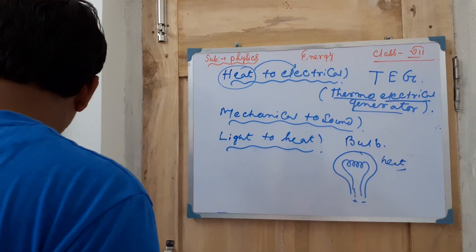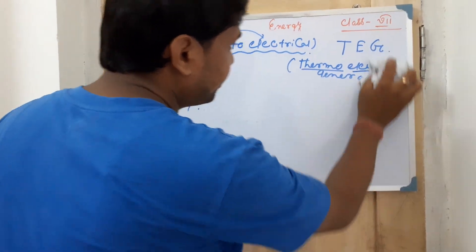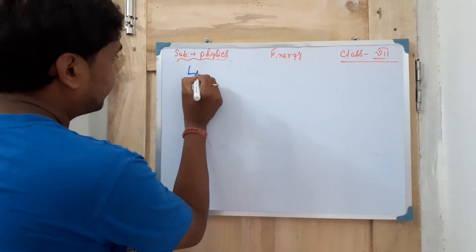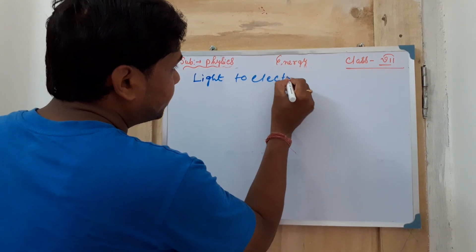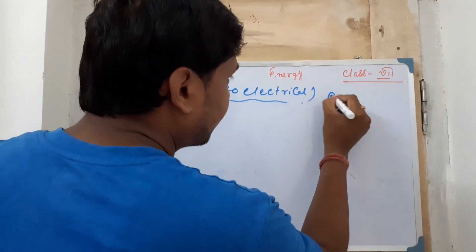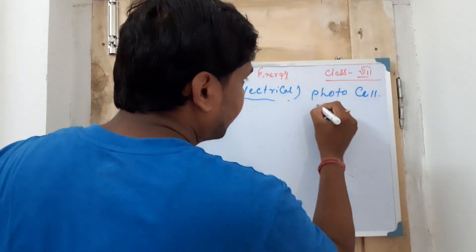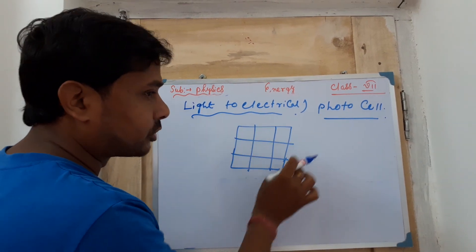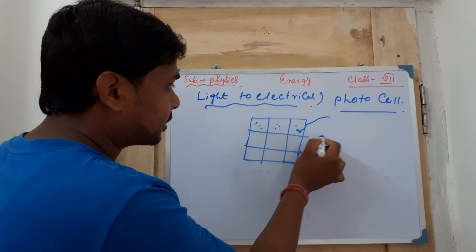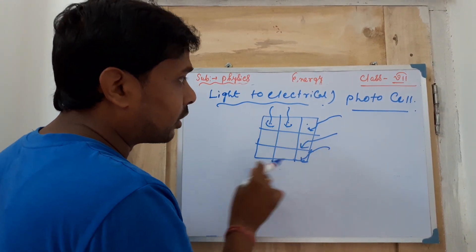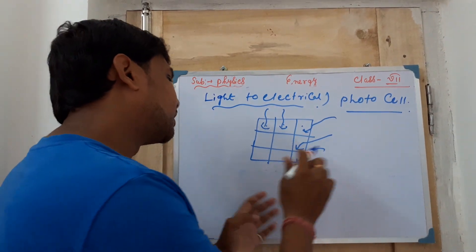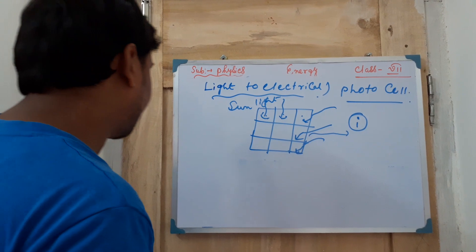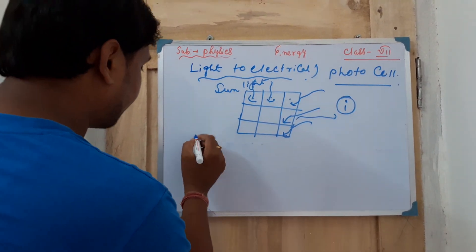For light to electrical energy, the example is a photocell or photoelectric cell — this is very important and repeatedly asked in exams. Solar panels are a practical example: when light energy from the sun falls on the solar panel, electrons are released and current is generated. So light energy is converted to electrical energy with the help of a photoelectric cell or solar panel.